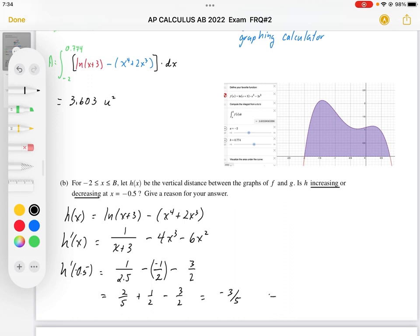So negative, therefore decreasing. So that H value is decreasing at that instant of X equals negative 0.5.